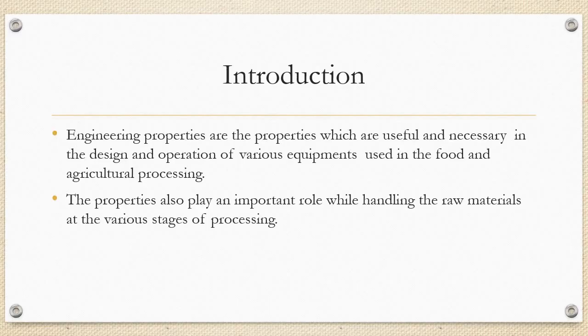Have you ever wondered what goes into the design and operation of the equipments for the food and agriculture products? Yes, it's based on the engineering properties of foods. They are properties which are useful and necessary in the design and operation of various equipments used in the food and agriculture processing. The properties also play an important role while handling the raw materials at various stages of processing.